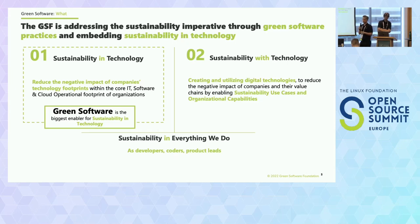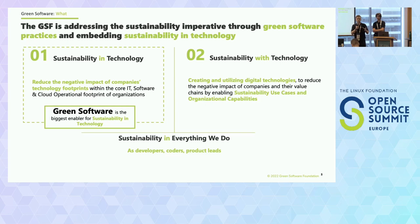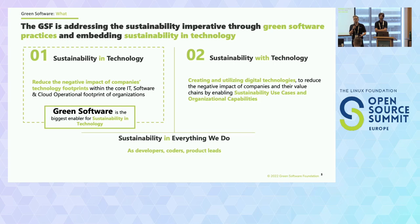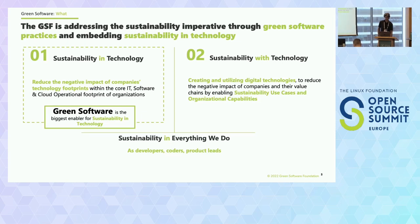There are two sides that the Green Software Foundation sees to sustainability. The first is sustainability within technology — thinking about your laptop's hardware, chips, software, and the carbon going into manufacturing and running it, including cloud service energy. The second is sustainability with technology — using technology like AI and camera systems to improve efficiency of processes and reduce carbon intensity, increase biodiversity, and so on. Today we'll mostly talk about sustainability in technology — making the technology we use every day more sustainable.